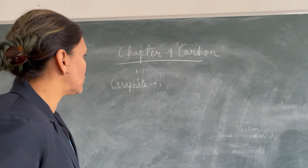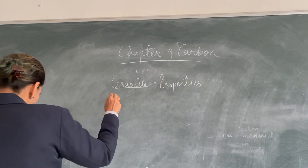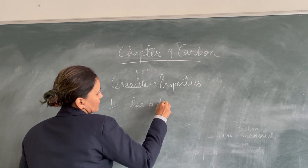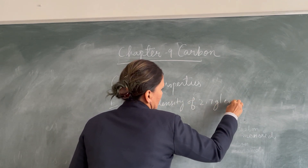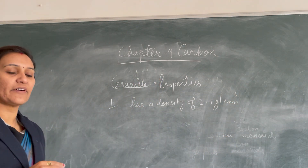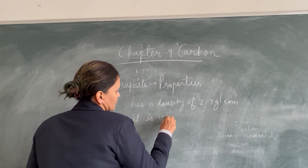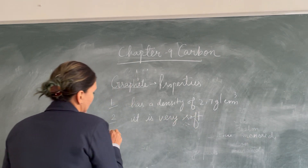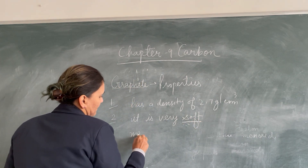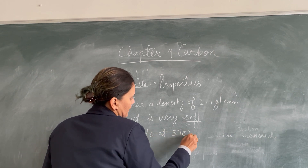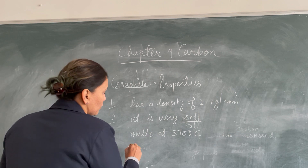Now let us talk about the physical properties of graphite. First, it has a density of 2.7 grams per centimeter cube. Second, unlike diamond, graphite is very soft in nature — diamond is the hard form. Third, it melts at a temperature of 3700 degrees Celsius. Fourth, unlike diamond, graphite is a good conductor of heat and electricity.